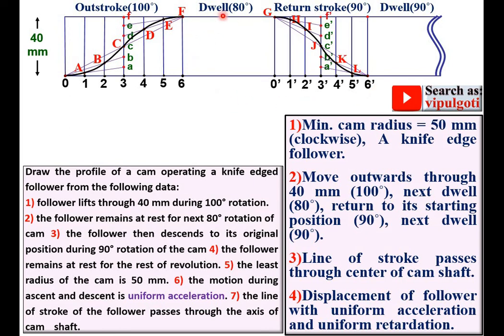Now as you know that this is the dwell period so it must be the horizontal line. So this is your displacement diagram.